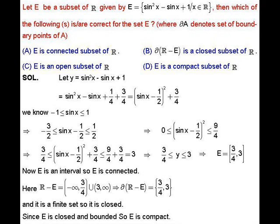Here E has elements of the form sin²x minus sinx plus 1, where x can be any real number. We define a function f: R → R by f(x) = sin²x - sinx + 1, so the range of this function equals E. We will find the range of this function. Let y = sin²x - sinx + 1. We can rewrite this as sin²x - sinx + 1/4 + 3/4, which equals (sinx - 1/2)² + 3/4.